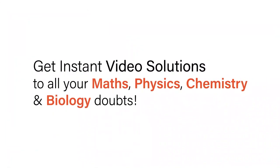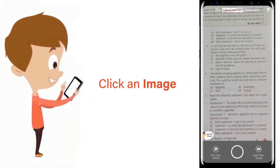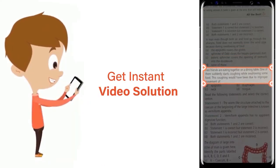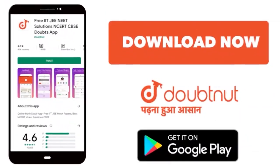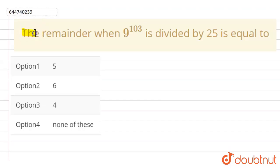With DoubtNet, get instant video solutions to all your maths, physics, chemistry, and biology doubts. Just click the image of the question, crop the question, and get instant video solution. Download DoubtNet app today. Hello student, the question is: the remainder when 9 to the power 103 is divided by 25 is equal to... these are the options.